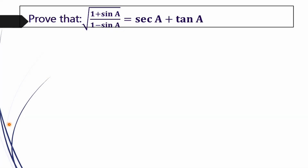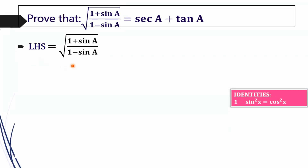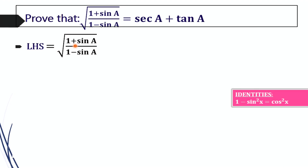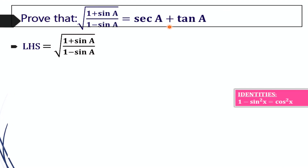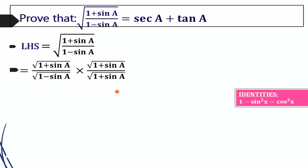For proving this, we first take the LHS of this equation. As a first step, we have to make the LHS square-root free, because our RHS has no square root. So we need to remove the square root by multiplying the numerator and denominator by square root of (1 plus sin A).